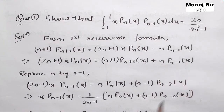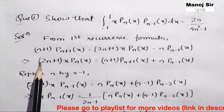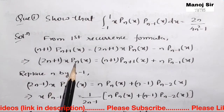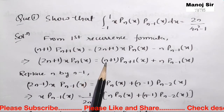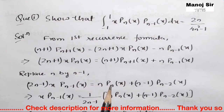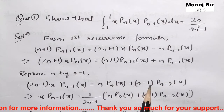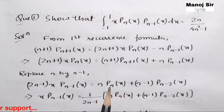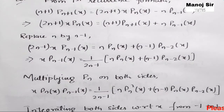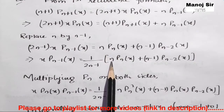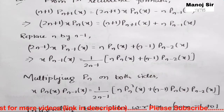Now we replace n by n−1. So (2n−1)·x·Pₙ₋₁(x) = n·Pₙ(x) + (n−1)·Pₙ₋₂(x). Taking x·Pₙ₋₁(x) to one side, we get: x·Pₙ₋₁(x) = 1/(2n−1) · [n·Pₙ(x) + (n−1)·Pₙ₋₂(x)].